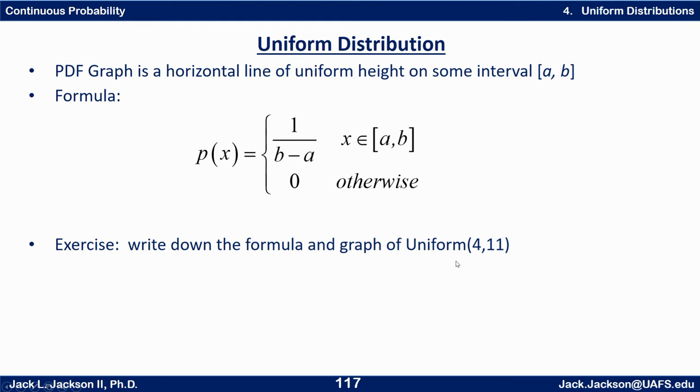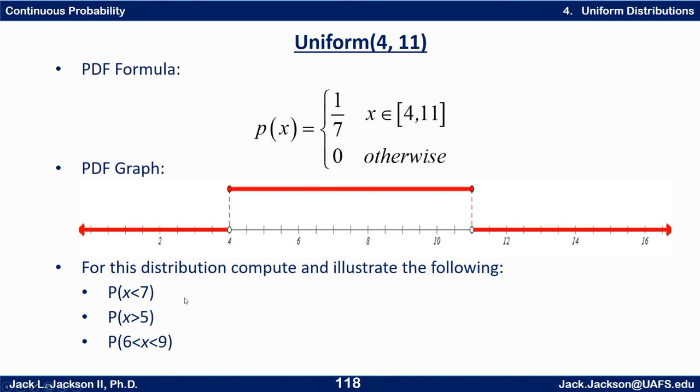So write down the formula and graph of the Uniform(4,11). Okay, well from 4 to 11 is a distance of 7, so the height must be one-seventh. The base is 7, the height is one-seventh. Multiply that together you get an area of one.